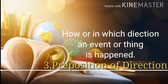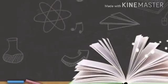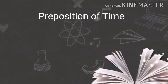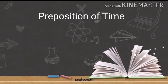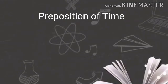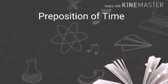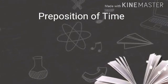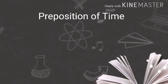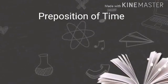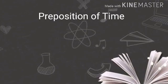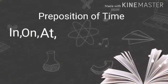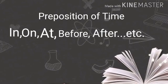Let's see the first type: prepositions of time. This type is used to show when a thing happened. The most common prepositions of time are: in, on, at, before, after, etc.